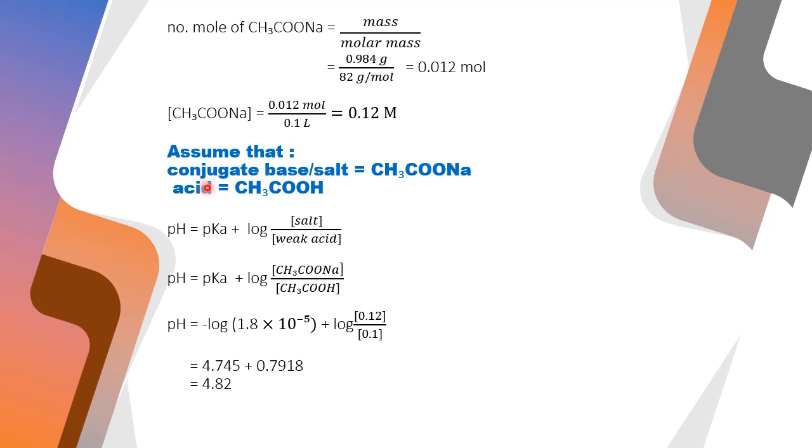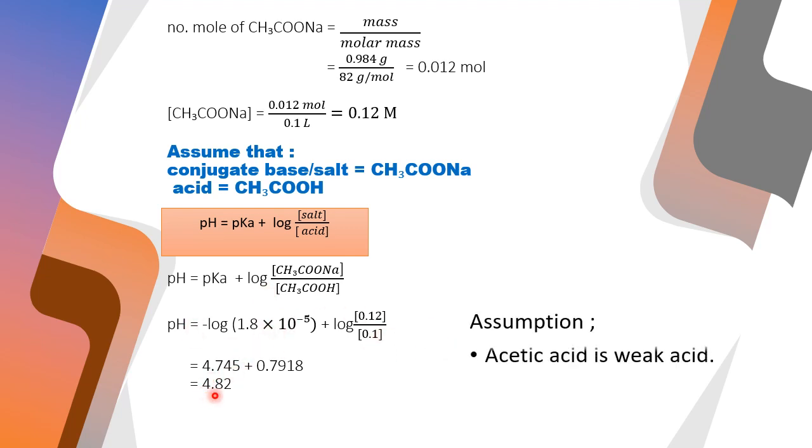So the next step, we assume that the conjugate base equals sodium acetate and acid equals acetic acid. So use the formula: pH equals pKa plus log concentration of salt over concentration of acid. Substitute the value and get 4.82.